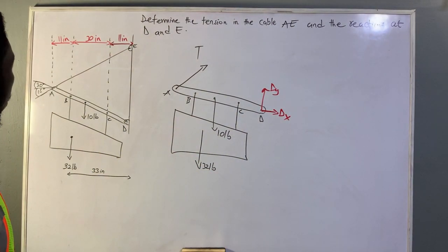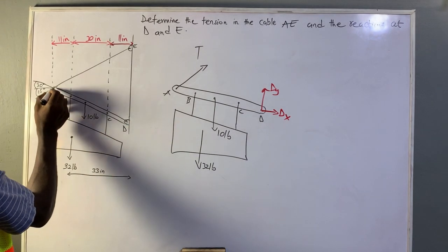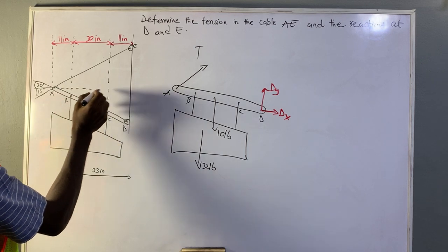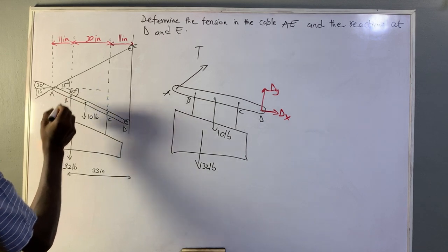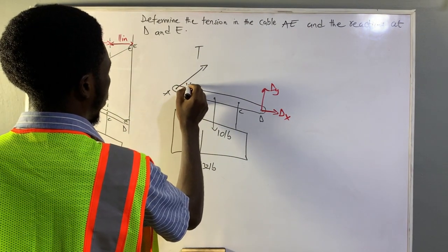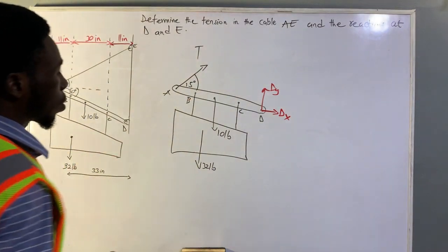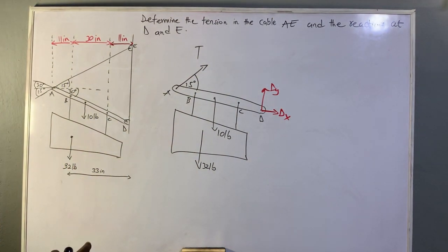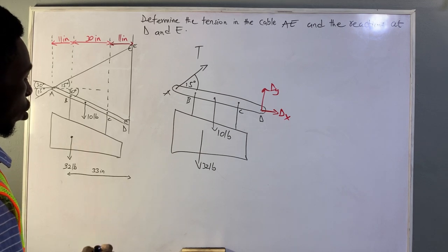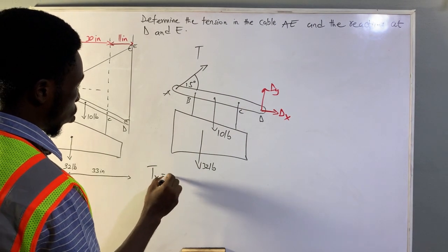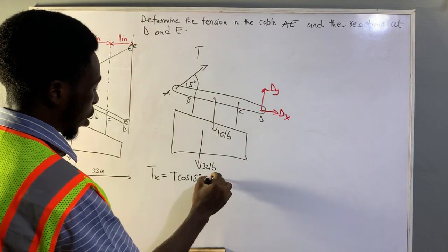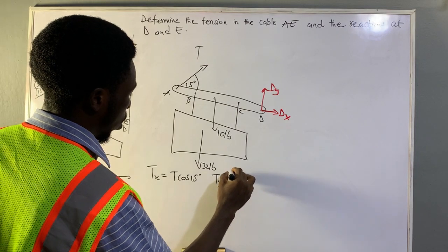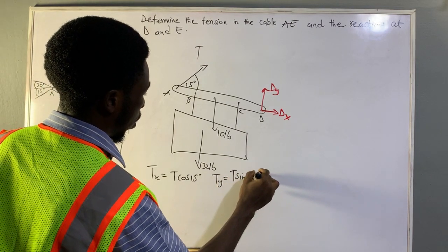Looking at this figure, if I draw a horizontal line here, you can see that you get 15 degrees here and 30 degrees here, and similarly 15 degrees on this side. From here you can find the components of the tension force: Tx equals T cosine 15 degrees, and Ty equals T sine 15 degrees.